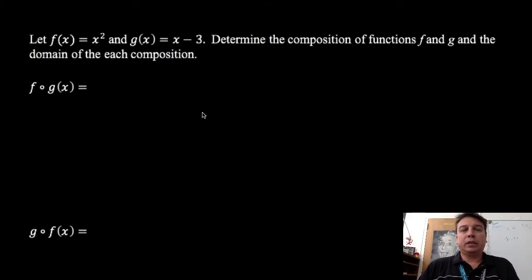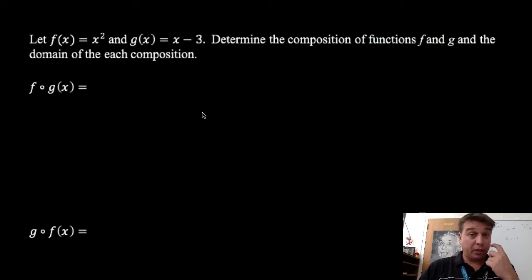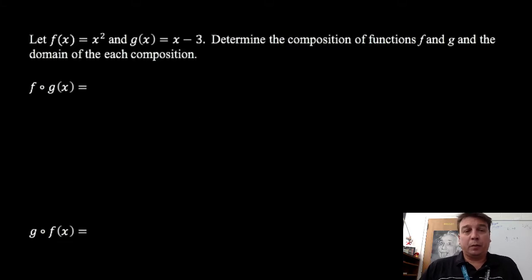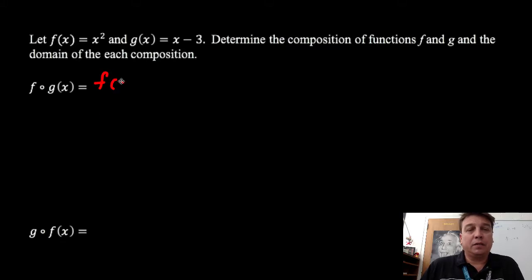So let's take a look at this first one here. It says let f of x equal x squared, g of x is equal to x minus 3. Determine the composition of functions f and g, and the domain of each composition. So when we see this, we know that this means I'm going to take f of g of x. So let's go ahead and rewrite this as f of g of x.